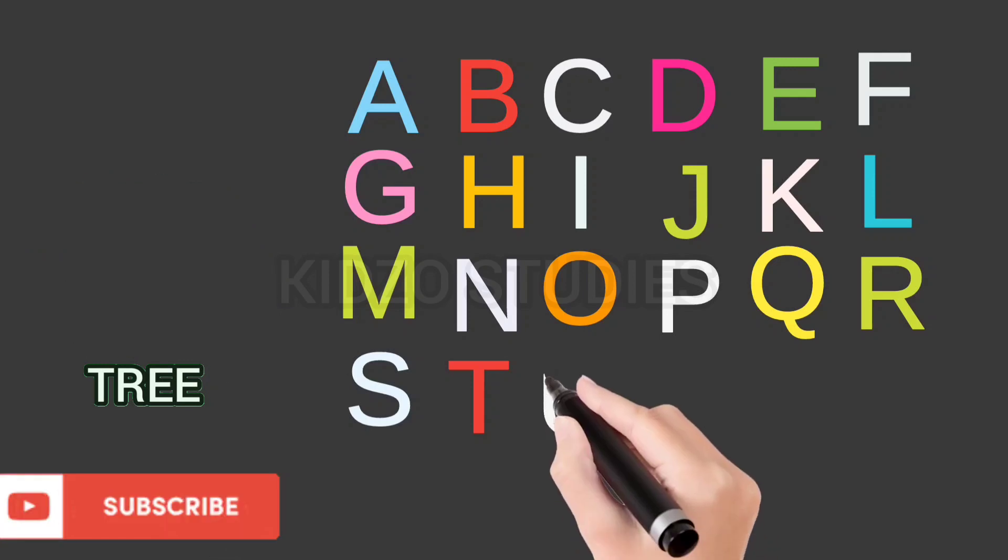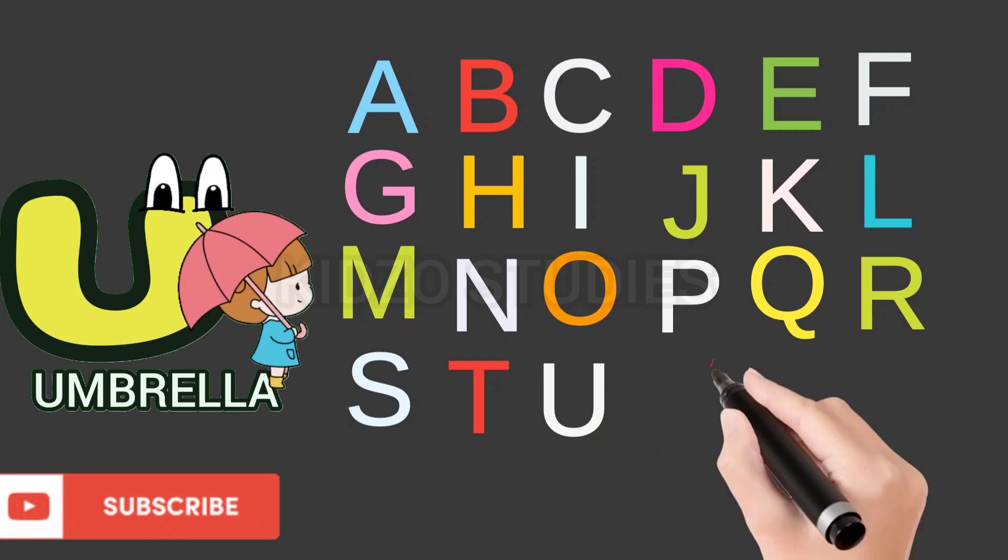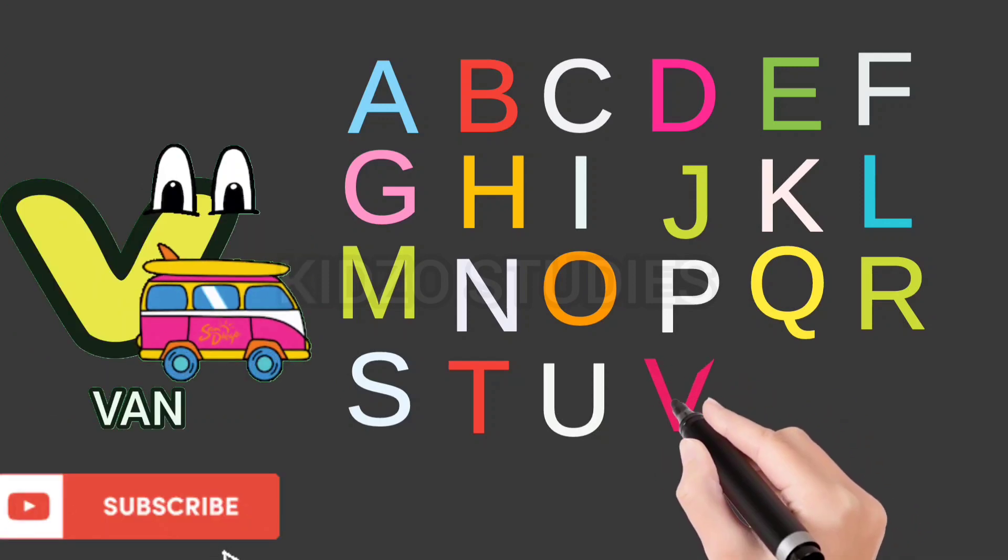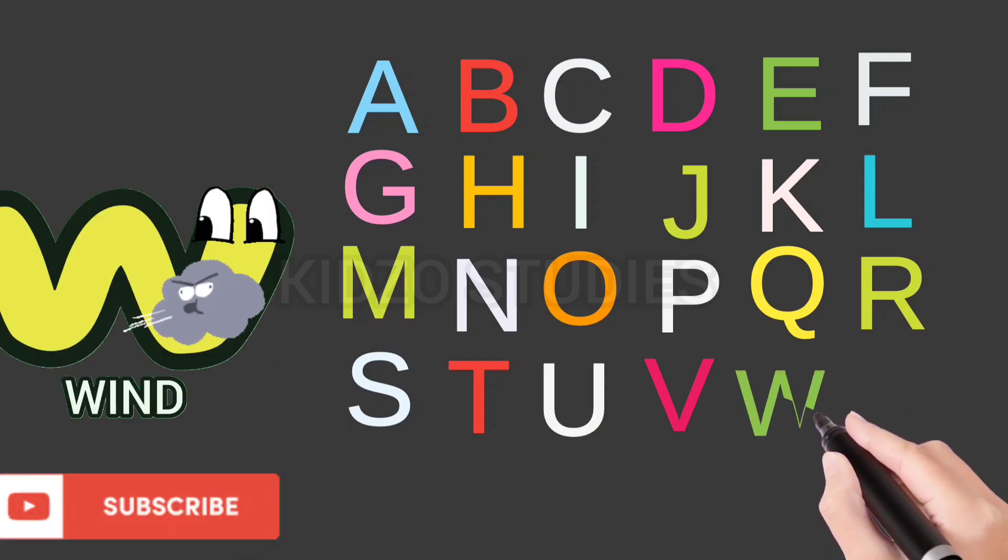U, U for Umbrella. V, V for Van. W, W for Wind.